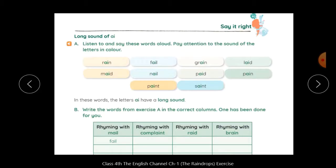Say it right, long sound of ay. Now, listen to and say these words aloud. You have to listen to these words, we will pronounce it, and then we will practice it. Pay attention to the sound of the letters in color. And those letters you have to see in green color, they will understand the sound, and listen to them.